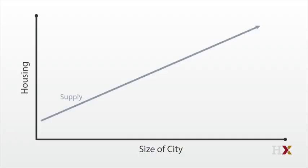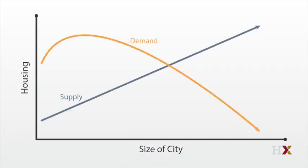But what if the agglomeration economies are strong enough to make demand slope up? There are lots of ways in which demand can slope up that won't matter. For example, what if willingness to pay for the city is greater than supply costs for the first person? Demand then rises a bit with city size, reflecting the agglomeration economies, but still remaining above the cost of providing housing. And then ultimately, demand starts falling, and then it crosses the supply curve. Things look a little funky, but there's still only one crossing point, and everything more or less works like before.